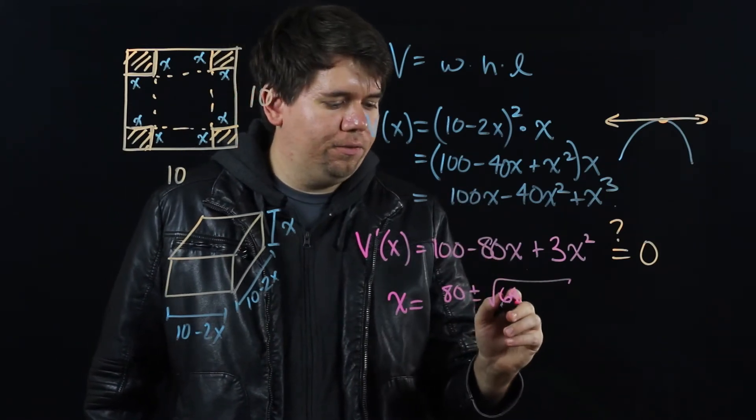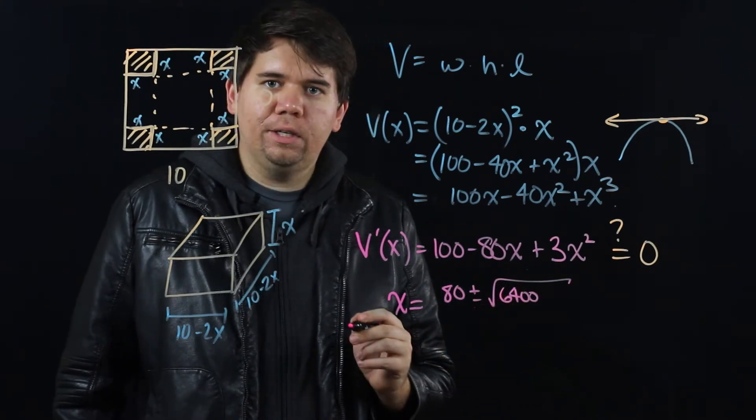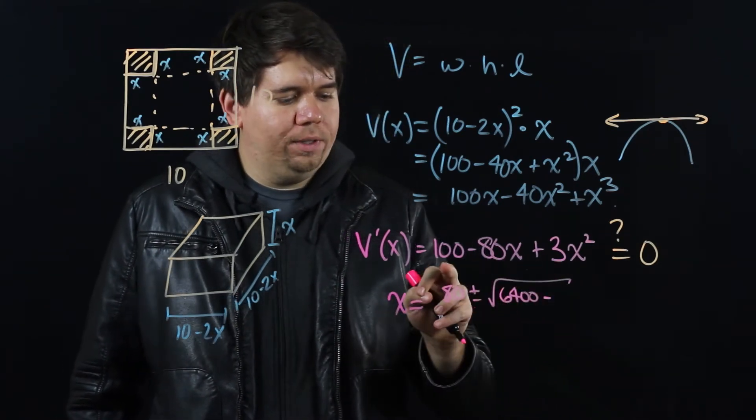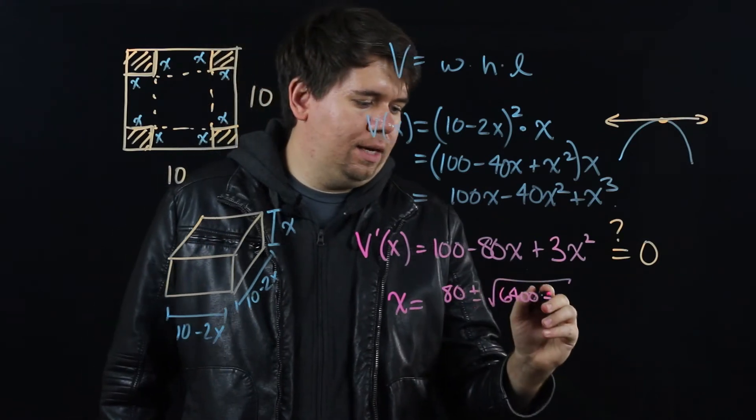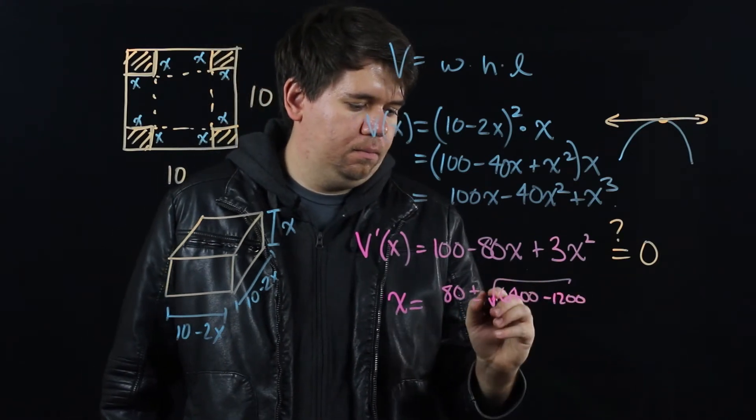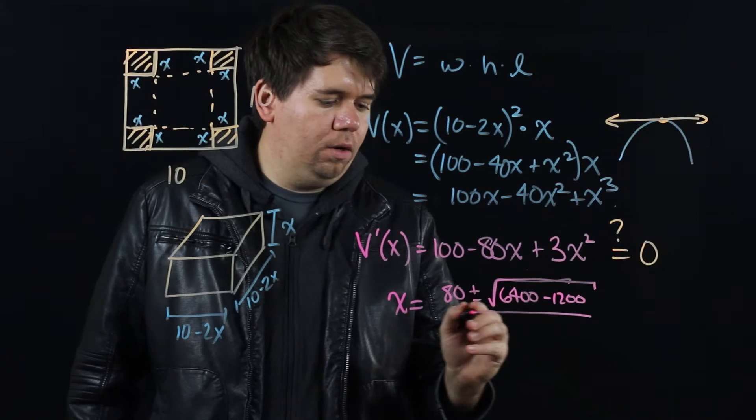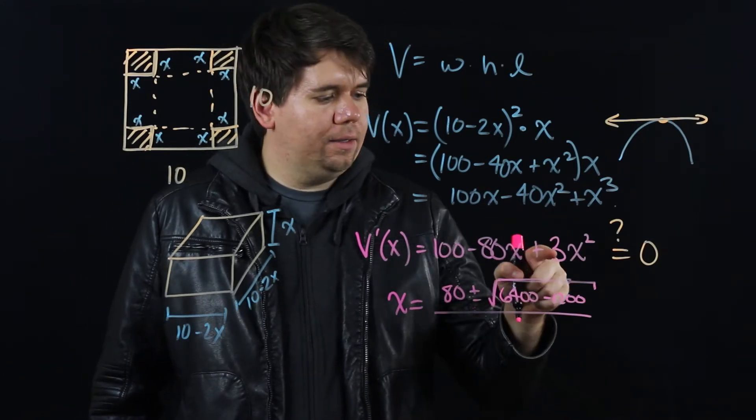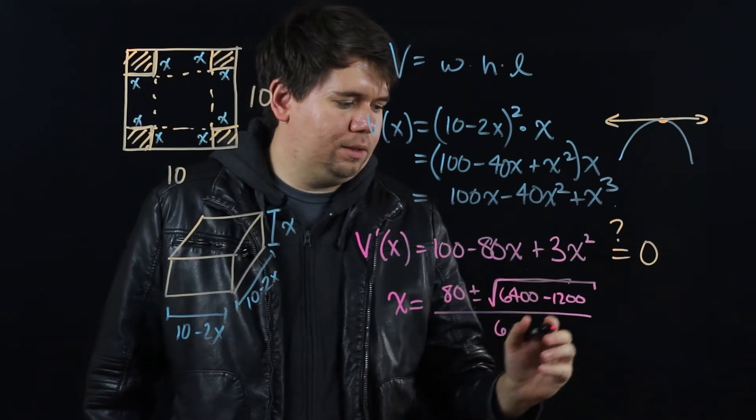That's 6400 minus 4ab - that's 12 times 100 or 1200 - all over 2a, 2 times 3, which is 6.